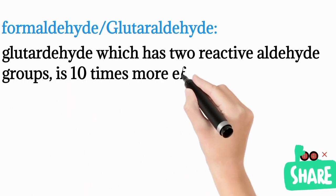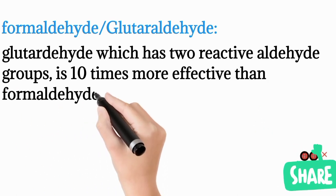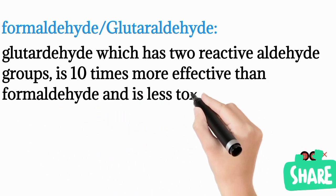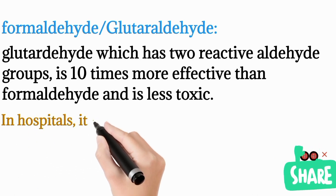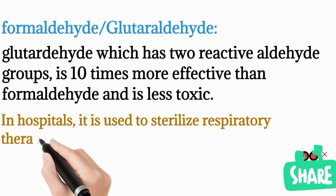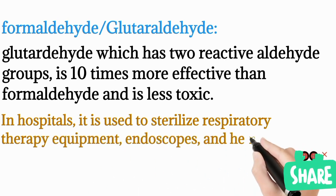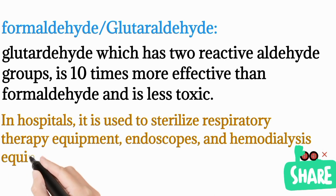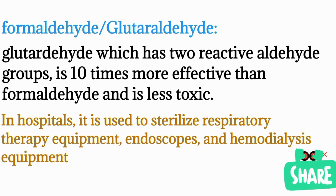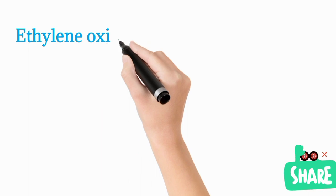Formaldehyde and glutaraldehyde are other chemical agents. Glutaraldehyde has two reactive aldehyde groups and is ten times more effective than formaldehyde. It is also less toxic, and in hospitals it is used to sterilize respiratory therapy equipment.